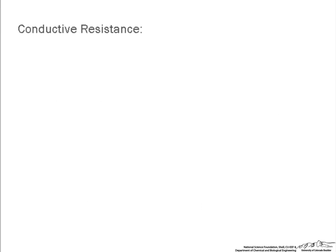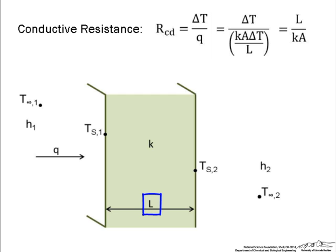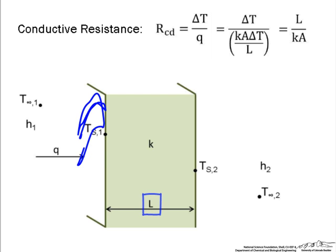Let's start with our conductive resistance. We go back to that equation for q. Conductive resistance equals delta T over q, which is delta T over kA delta T divided by L. So our conductive resistance is L divided by k times A, where L is the length of the wall, and A is the area right here that q goes through.